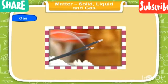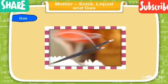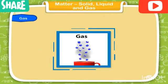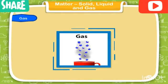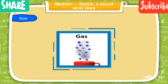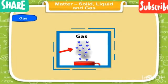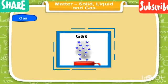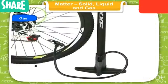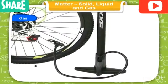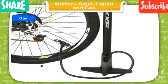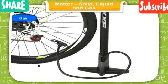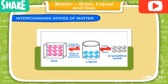If you light an agarbatti in one corner of a room, the fragrance spreads quickly all over the room, because molecules of gas are quite loosely packed and they can move freely and flow easily. The molecules of a gas have much space between them and are not closely packed together. If you fill air in a bicycle tube, it fills all the capacity available inside the tube.